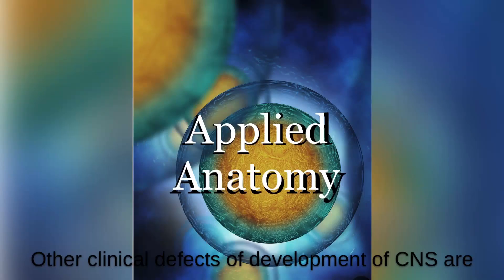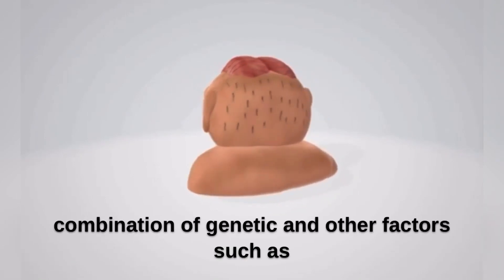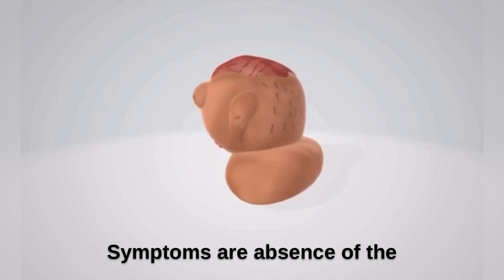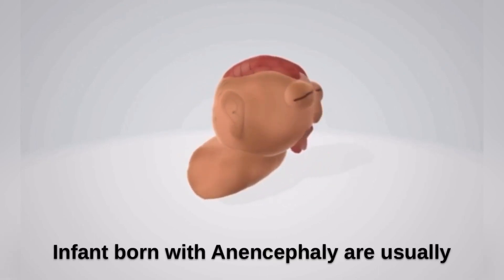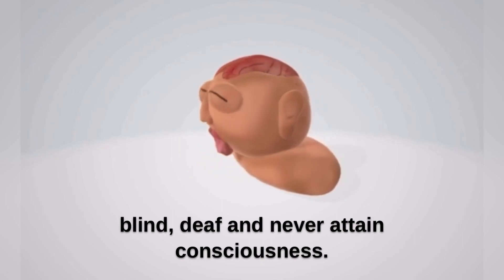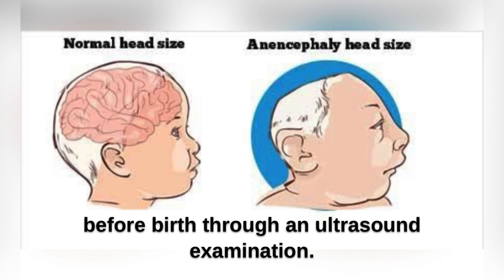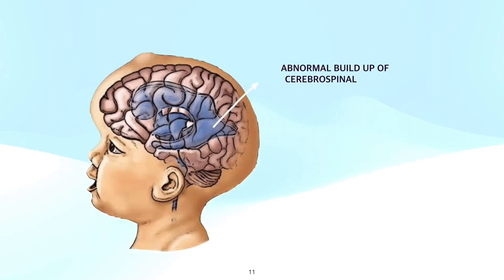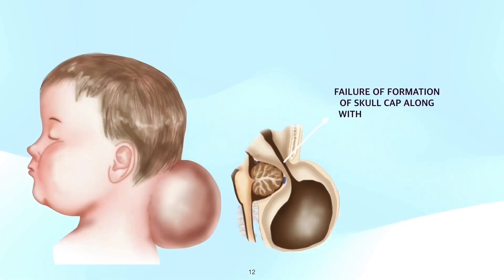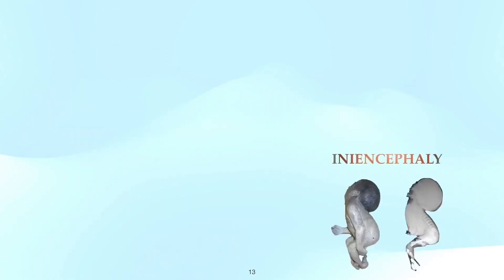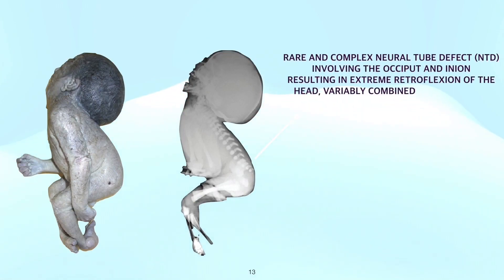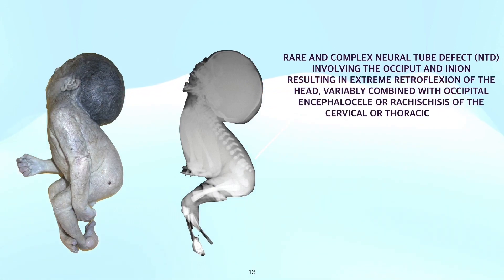Other clinical defects of CNS development include anencephaly, which may be caused by a combination of genetic and environmental factors the mother encounters during pregnancy. Symptoms include absence of the cerebrum and cerebellum; infants born with anencephaly are usually blind, deaf, and never attain consciousness. Anencephaly can often be diagnosed before birth through ultrasound, and there is no cure or standard treatment. Additional defects include hydrocephalus — an abnormal buildup of cerebrospinal fluid in the ventricles deep within the brain — encephalocele, caused by failure of formation of the skull cap with protrusion of brain and meninges, and iniencephaly, a rare and complex neural tube defect involving the occiput and inion, resulting in extreme retroflexion of the head, variably combined with occipital encephalocele or rachischisis of the cervical or thoracic spine.